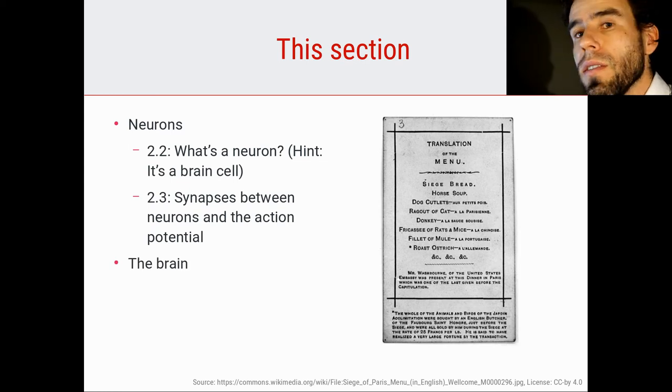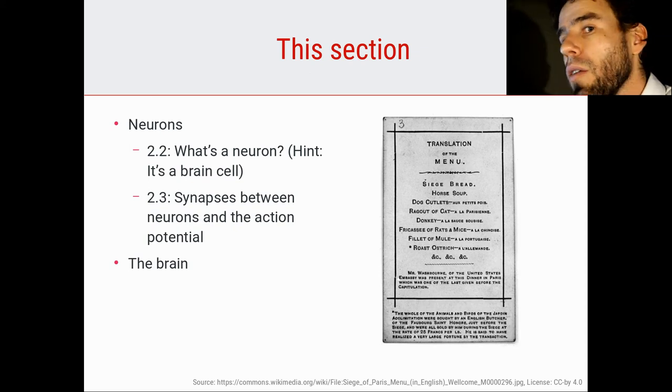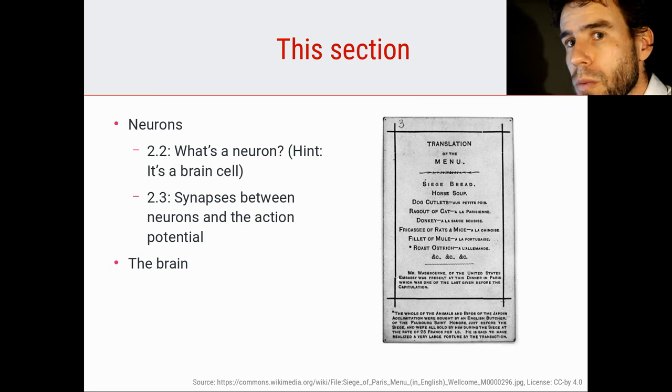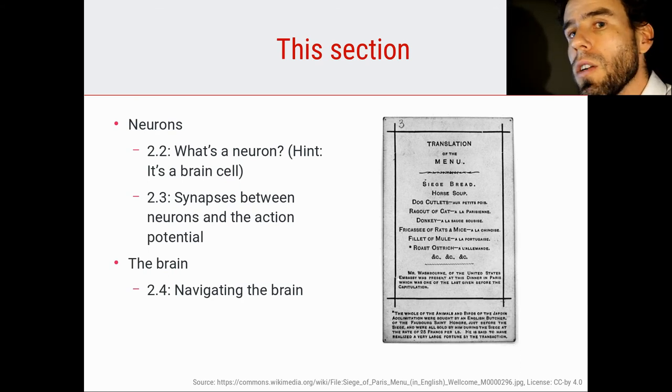Then after we've looked at the smallest part of the brain, right, neurons, you can think of neurons as the smallest building blocks of the brain. Of course, neurons are themselves built up out of molecules and atoms, etc. But I think from a biological psychology perspective, you can say that neurons are the smallest elements that really matter. So that's where we will start. And then in video 2.4, we will take a more bird's eye view and look at the brain from a more large-scale perspective and learn to navigate the brain.